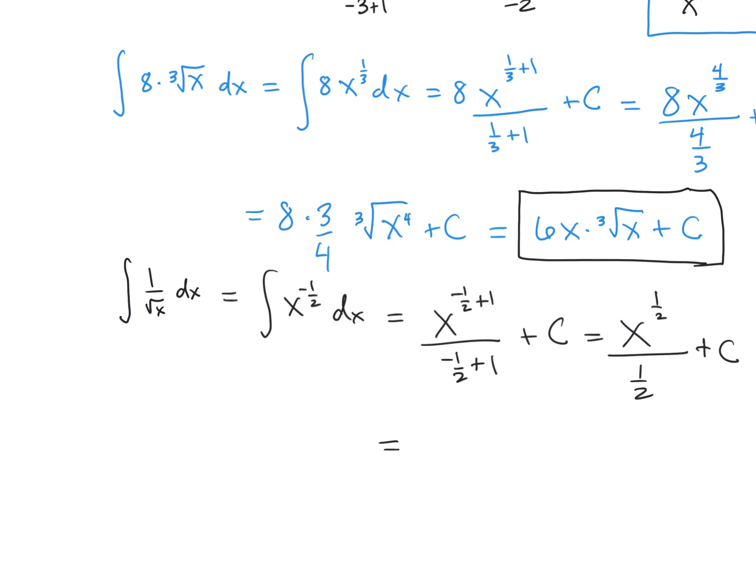And then finally, dividing by 1/2 is the same thing as multiplying by 2. x to the 1/2, we know, is the square root of x. And we have our arbitrary constant plus C.